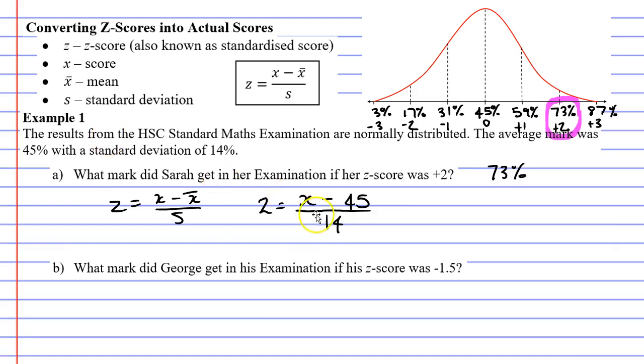We've got to rearrange this formula and find x. The first thing we're going to do is multiply both sides by 14. We're just going to cancel the 14 at the bottom. 2 times 14 is 28. So we're going to have 28 equals x minus 45. We're now going to add 45 to both sides. The reason we're doing this is because it will cancel out the 45 on the right. And 28 plus 45 actually comes to 73. So we get 73 equals x, meaning that x equals 73%, or that Sarah got a mark of 73%.